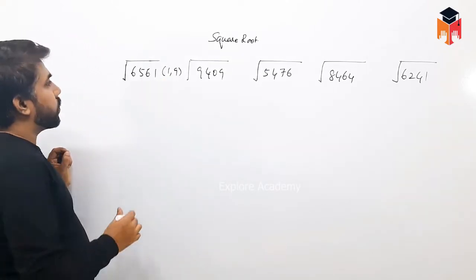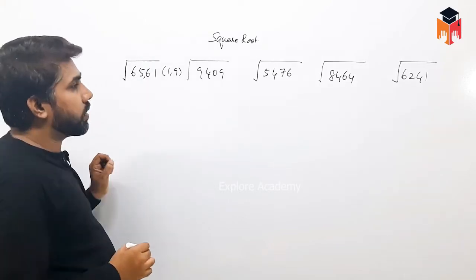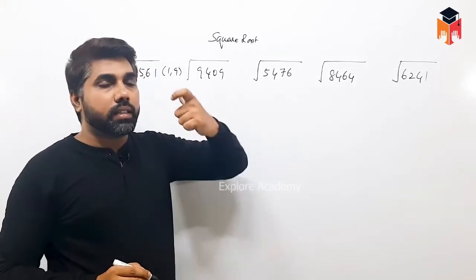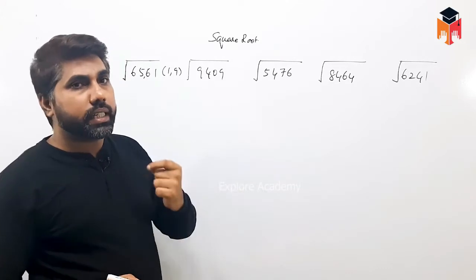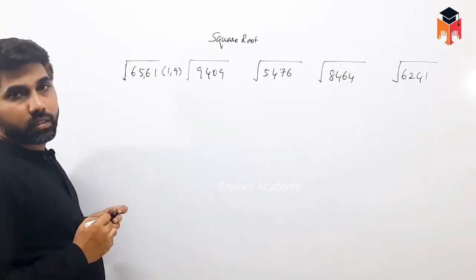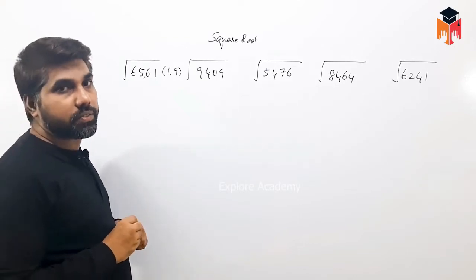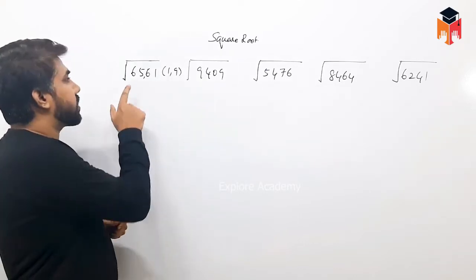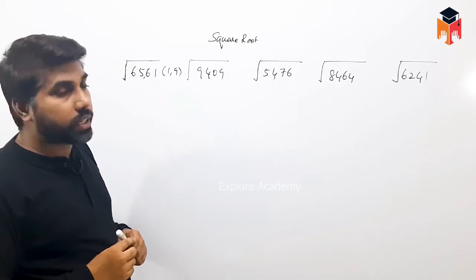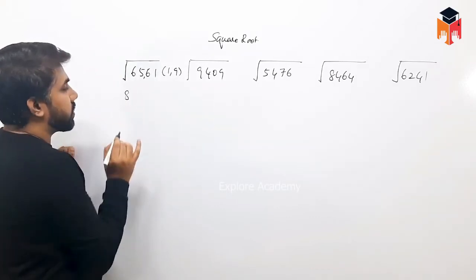Step 2: I am going to show you the square root list. Check the square root. 1 squared is 1, and so on — let me check the square root values from the list. Step 2 is complete.